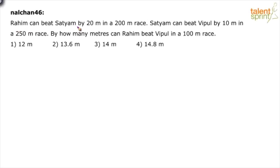Raheem can beat Satyam by 20 meters in a 200 meter race. Satyam can beat Vipul by 10 meters in a 250 meter race. By how many meters can Raheem beat Vipul in a 100 meter race?